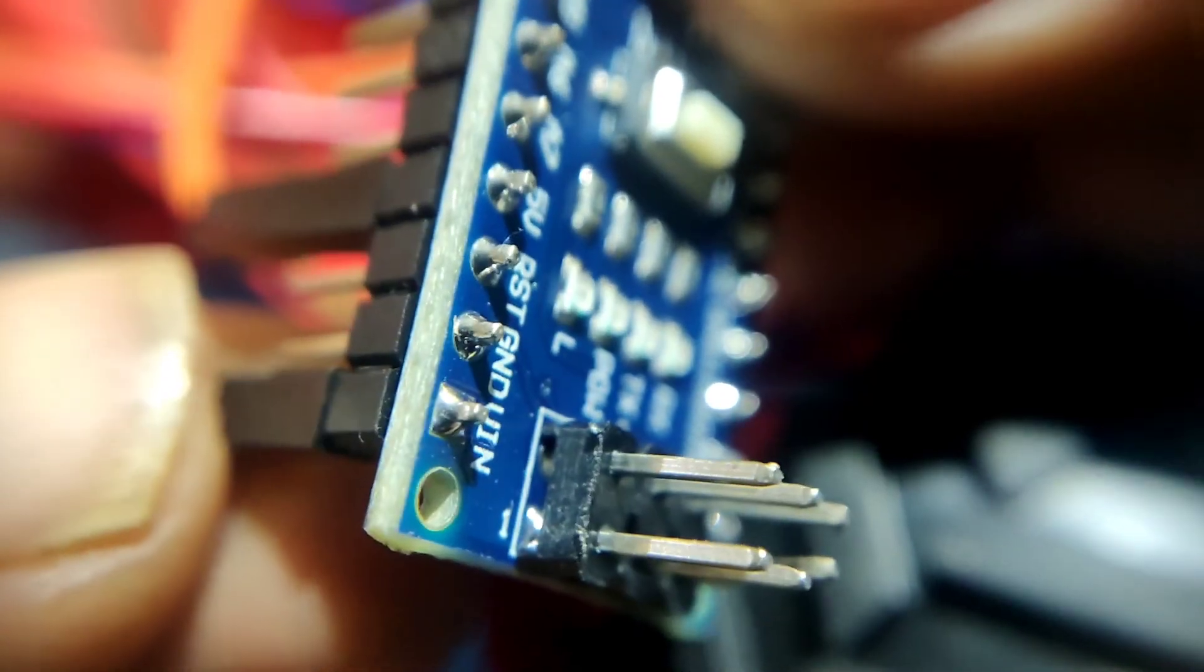Connect the V-in pin of the Arduino to the 5V output pin of the driver module. Similarly, connect the GND pin to GND pin of the driver module.